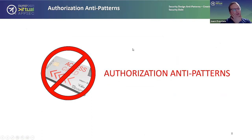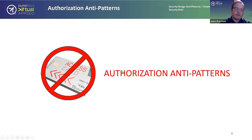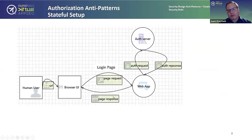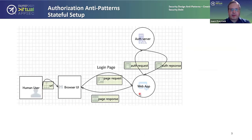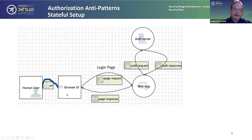Now we'll talk about authorization anti-patterns. To do this I'm going to walk you through a sample web application and let it grow over time, then show you where the anti-patterns are and how that could create security debt. The first application is a stateful web application. We have a human user, a browser, a web application, and some kind of authentication/authorization server. The user keys in the URL, brings up the login page, data is sent to the web application, and there's a ping-pong between the web app server and the authentication server.